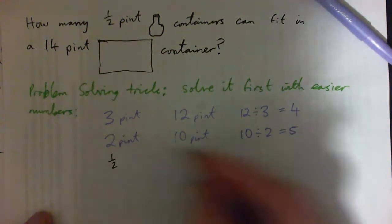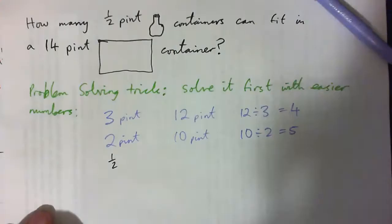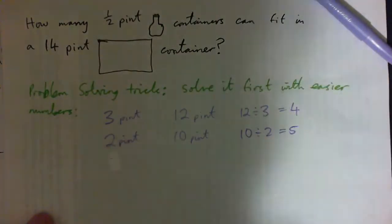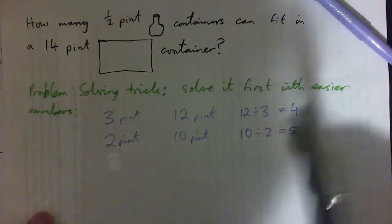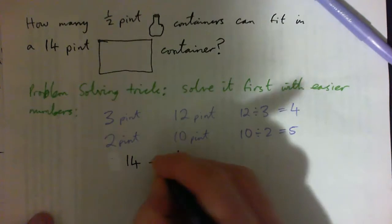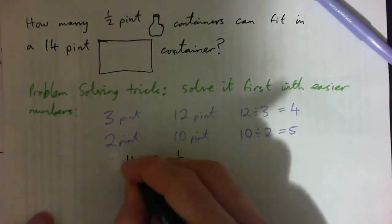Our question is: how many half-pints will fit inside of a 14-pint container? So what do we do? Just like these examples, we divide. You go 14 pints divided by a half. That's what division means: how many halves are contained in 14.